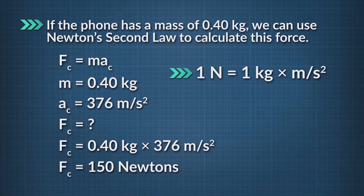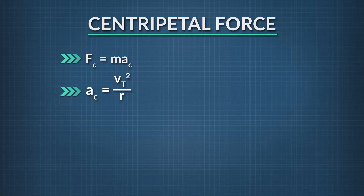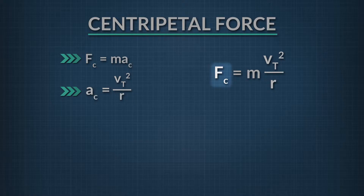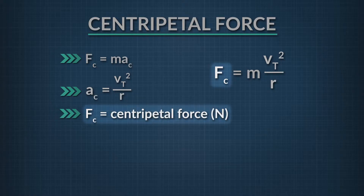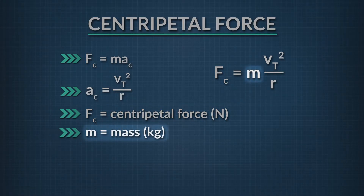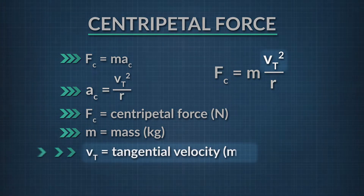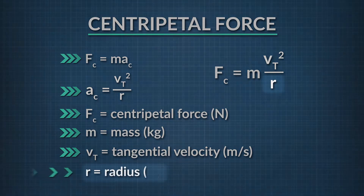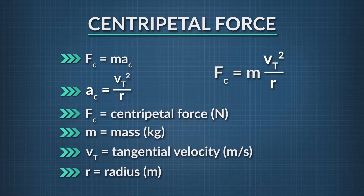There's an equation for centripetal force that you can use, which simply substitutes centripetal acceleration for acceleration in Newton's second law. F sub C, or centripetal force in newtons, is equal to the mass in kilograms of the object in circular motion times the tangential velocity squared in meters per second, divided by the radius in meters of the circle. Centripetal force is just the name we give to the class of forces acting on any object that's in uniform circular motion.